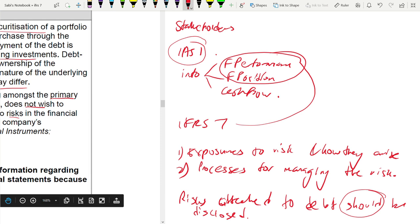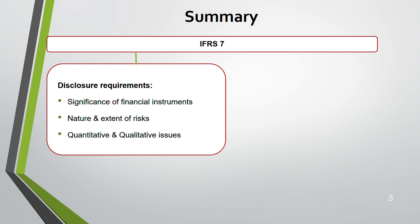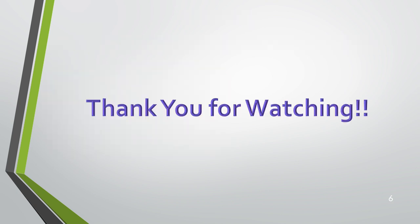So let's summarize IFRS 7. The disclosure requirements cover: number one, significance of financial instruments; number two, nature and extent of risk; number three, quantitative and qualitative issues. This is a very small area yet very significant. Thank you for watching, and see you in the next major standard - IFRS 9 - which I know many of you have lots of questions about. It's a very challenging standard, but after the video you will not find IFRS 9 challenging anymore - in fact, it's one of the easiest standards once you know the steps. Don't forget to subscribe if you haven't, and take care.